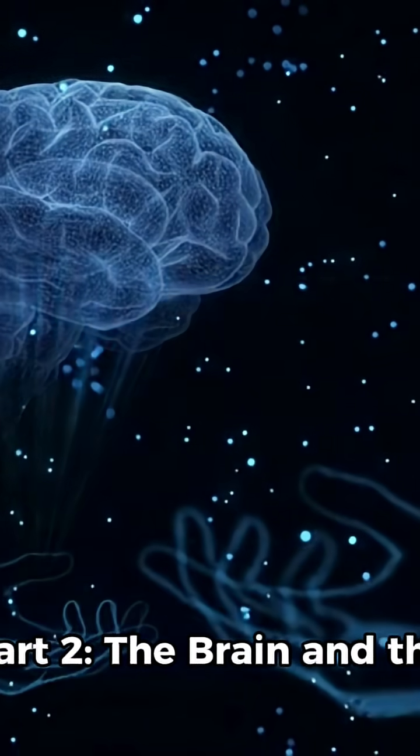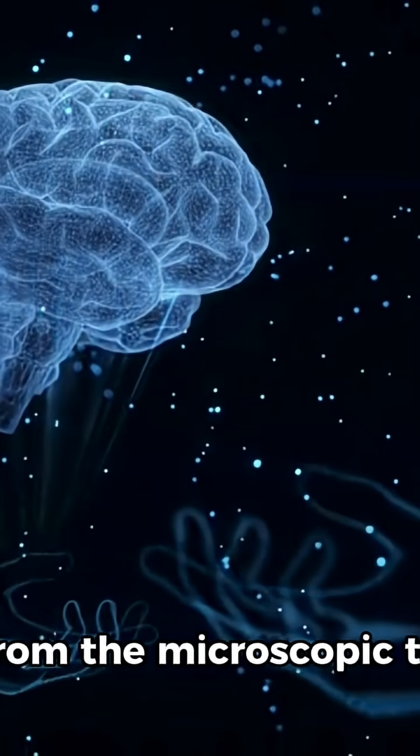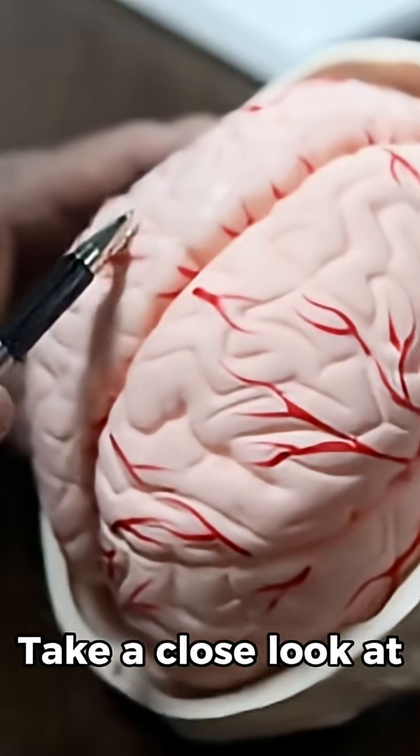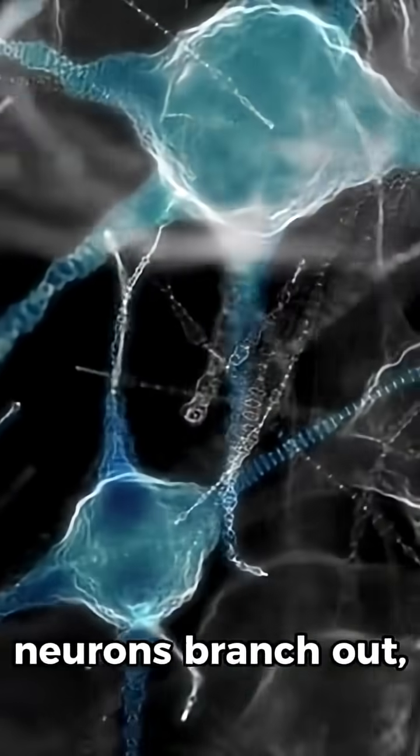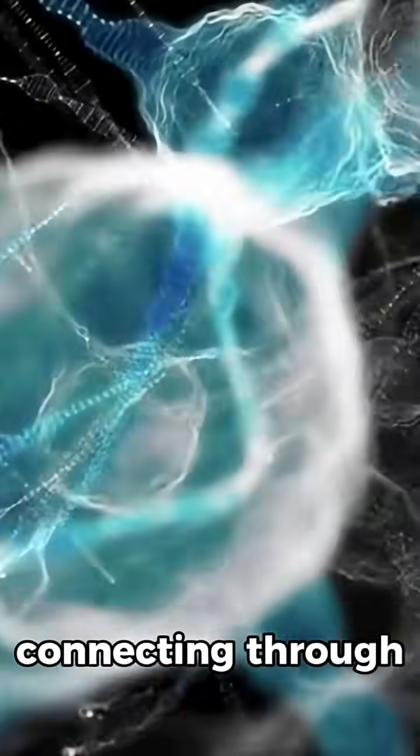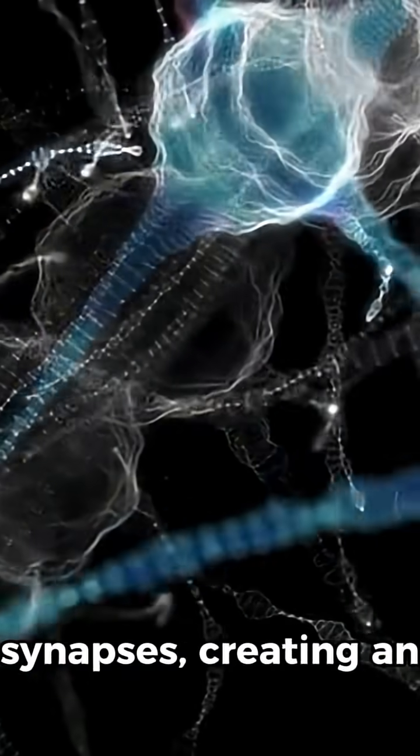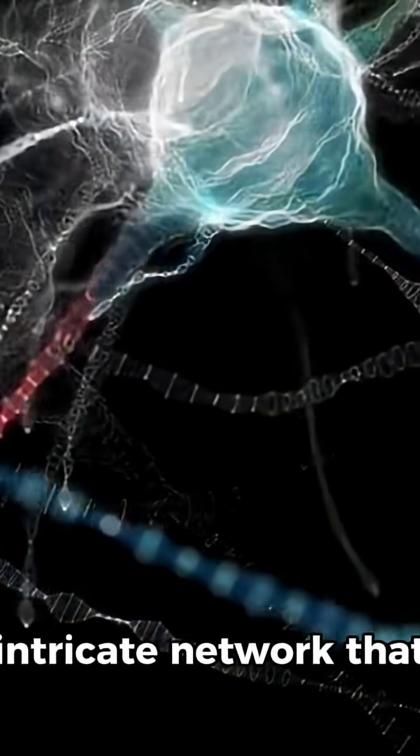Part 2. The Brain and the Universe. Now let's move from the microscopic to the macroscopic. Take a close look at the human brain. Inside it, billions of neurons branch out, connecting through synapses, creating an intricate network that allows you to think, feel, and be aware.